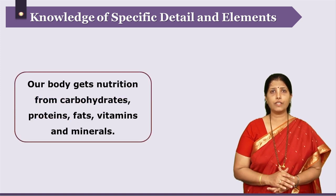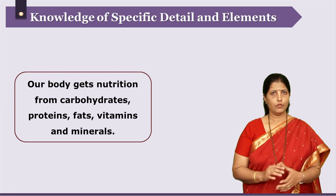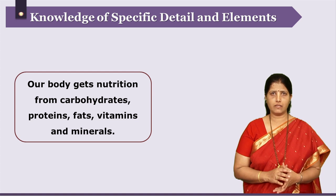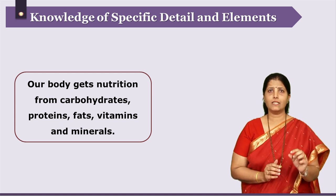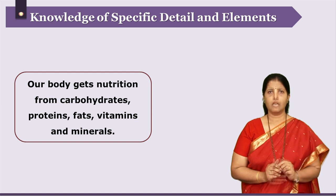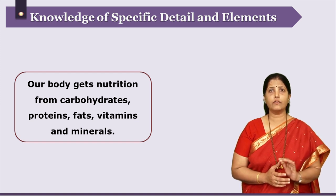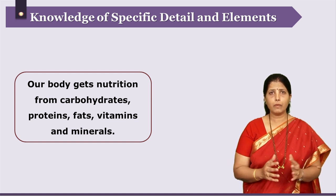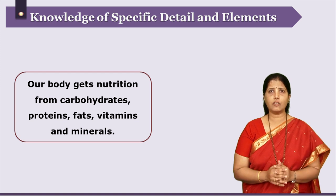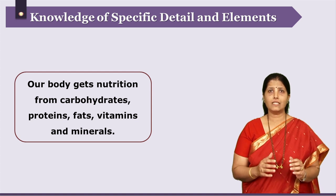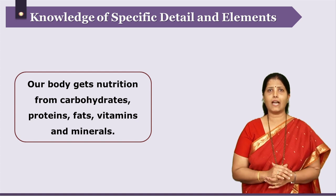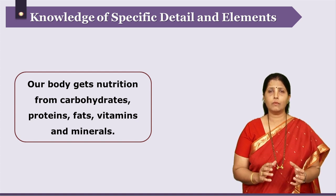Another example: nutrients required by our body — fats, carbohydrates, proteins, minerals, and vitamins. When you consider the names of these independently, they fall in the category of knowledge of terminology. But when you think of these details together — complementing each other, different types of minerals necessary for the growth of our body — and consider this holistic picture of nutrients required by our body, they fall in the category of knowledge of specific details and elements.